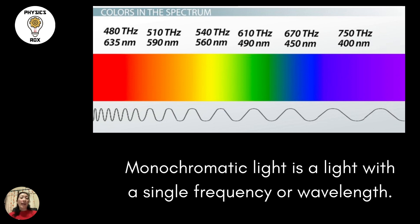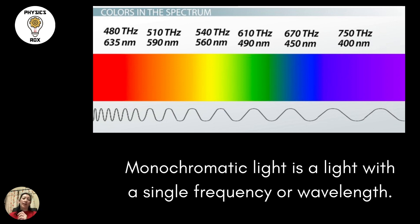Therefore, white light is not monochromatic. White is the combination of all these colours, so it is shining all multiple frequencies — it is not a single frequency only. White light is not a monochromatic light source.